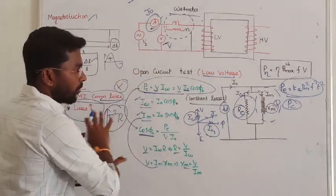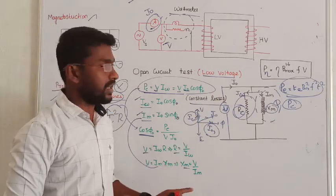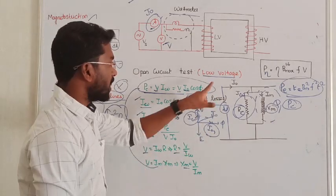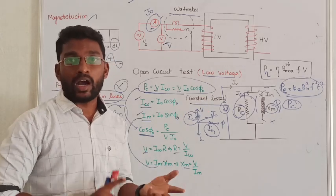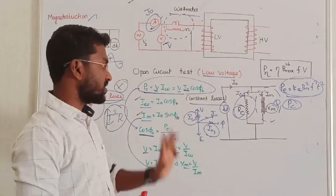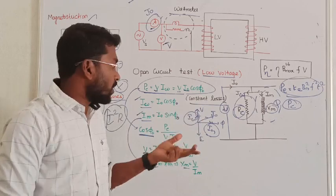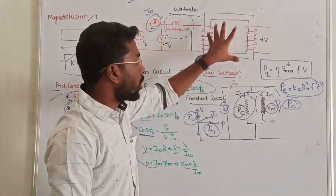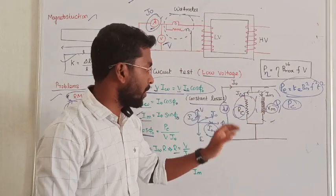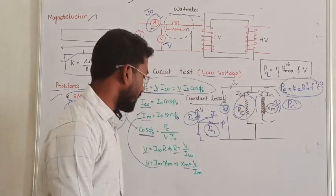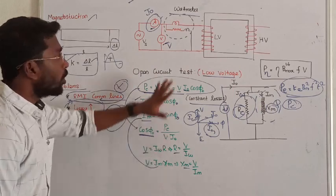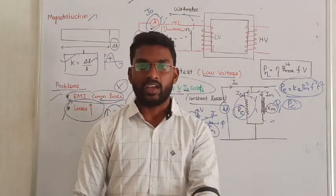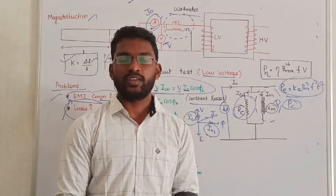This is all about the open circuit test. The conclusion is: the open circuit test is conducted on the low voltage side only to avoid high electrical or voltage stress. From the open circuit test we find the constant loss, that is the core loss, and we also determine the shunt branch parameters — the core resistance R0 and the magnetizing reactance Xm. Thanks for watching.